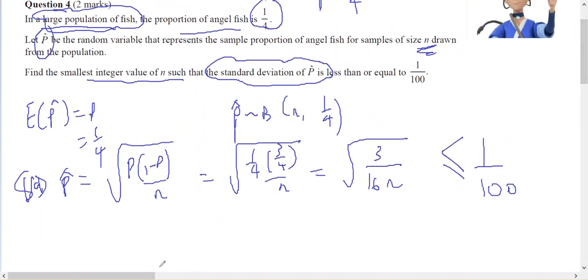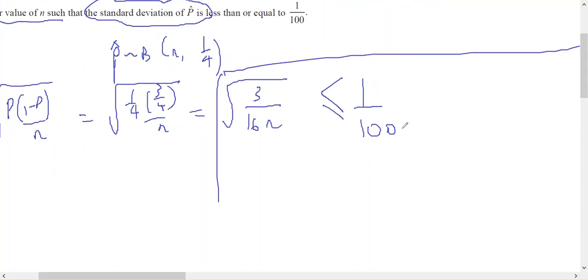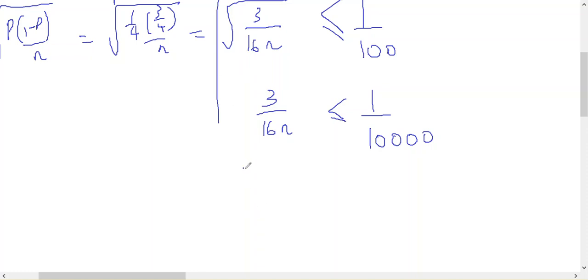Now it's a matter of solving for n. If I square both sides, then the left will still be smaller than the right. So three over 16n less than or equal to one over 10,000. Move that over: 30,000 should be less than or equal to 16n.